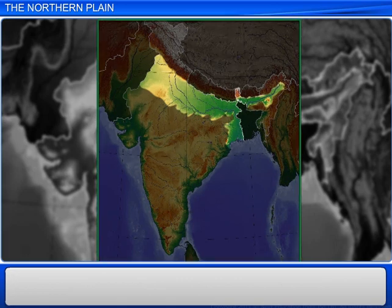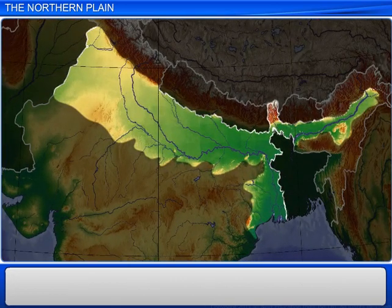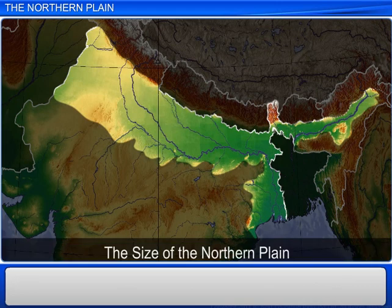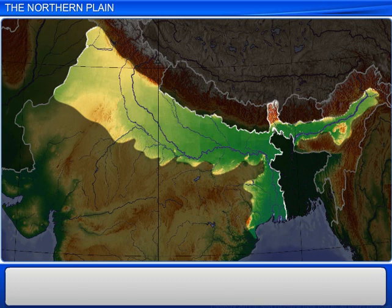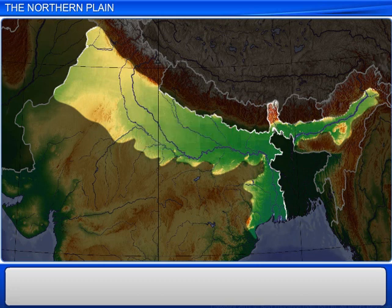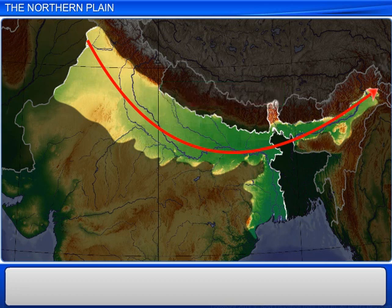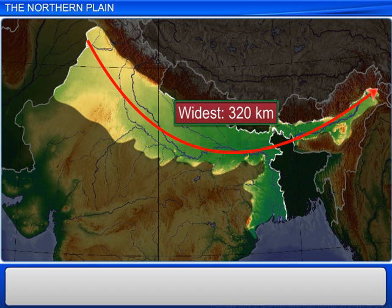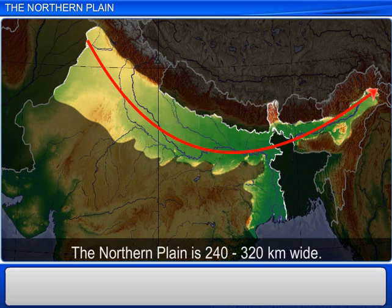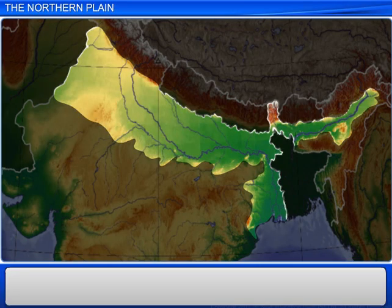The plain spans the area of a small country. The area of the plain is about 7 lakh square kilometres. The width of this plain varies as you go from north to south — at its narrowest, it stretches across 240 kilometres, and at its widest, it stretches across 320 kilometres. The length of the plain is 2,400 kilometres.